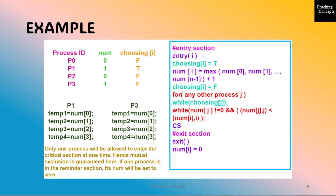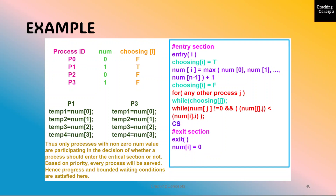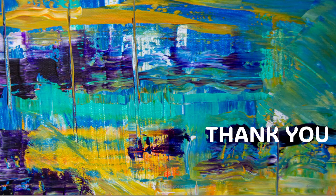If one process is in the remainder section, its num value will be set to 0. Thus only processes with a non-zero num value participate in deciding whether to enter the critical section. Based on priority, every process will be served. Hence progress and bounded waiting conditions are satisfied here. That's all for now. Thank you for watching.